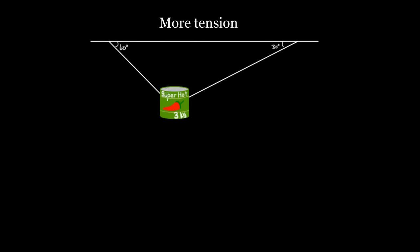You bought a huge canister, an aluminum can, of super hot red peppers — three kilograms worth — and you hung them from two strings from the ceiling, because you don't want anyone to get your super hot red peppers. You wanted to know: what's the tension in both of these strings? If this is the angle that the strings make with the ceiling, what are these two tensions? This problem's hard. This problem's spicy. This is a spicy tension problem. Let's start with something a little more mild and work our way up to see how this works.